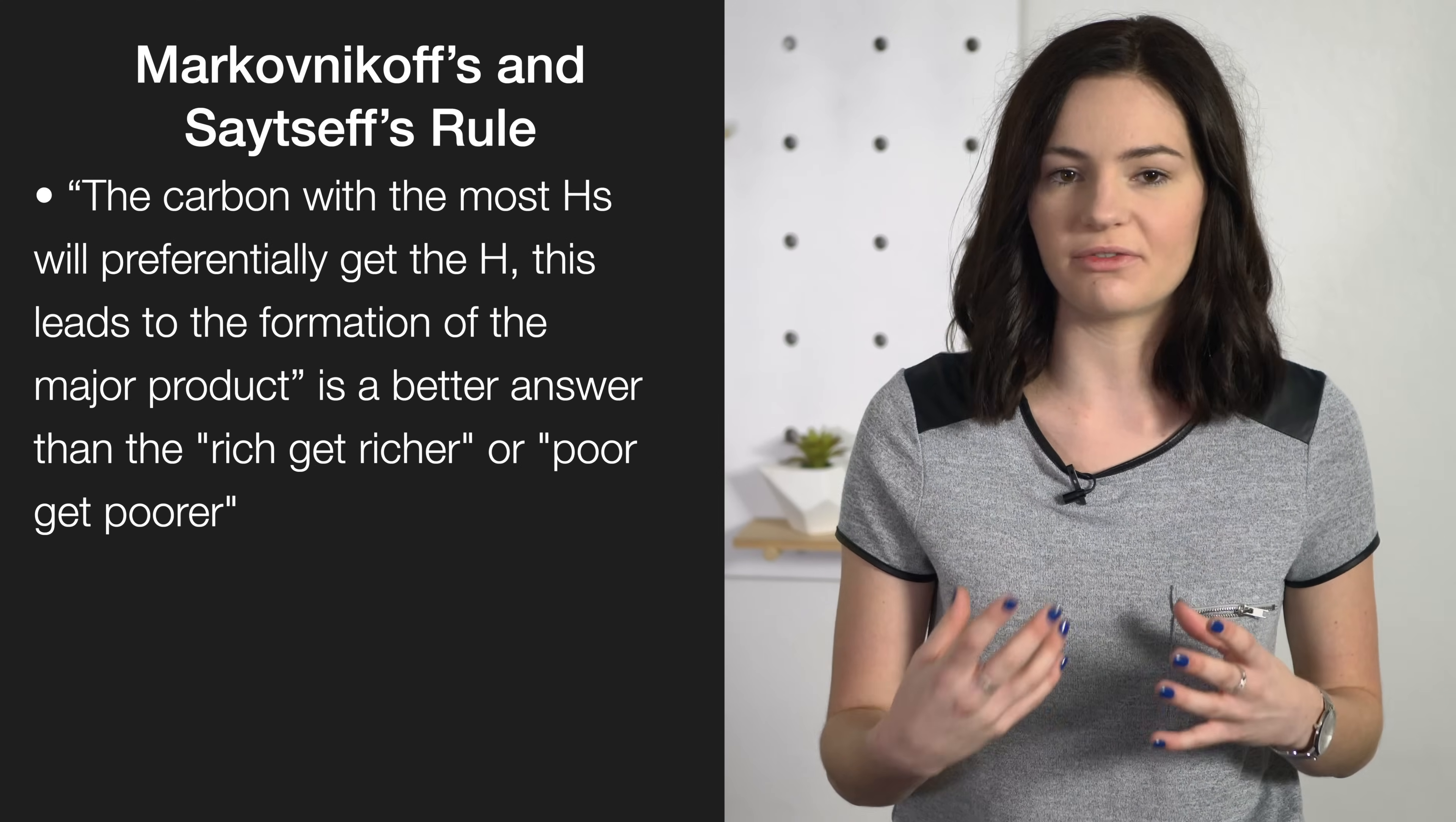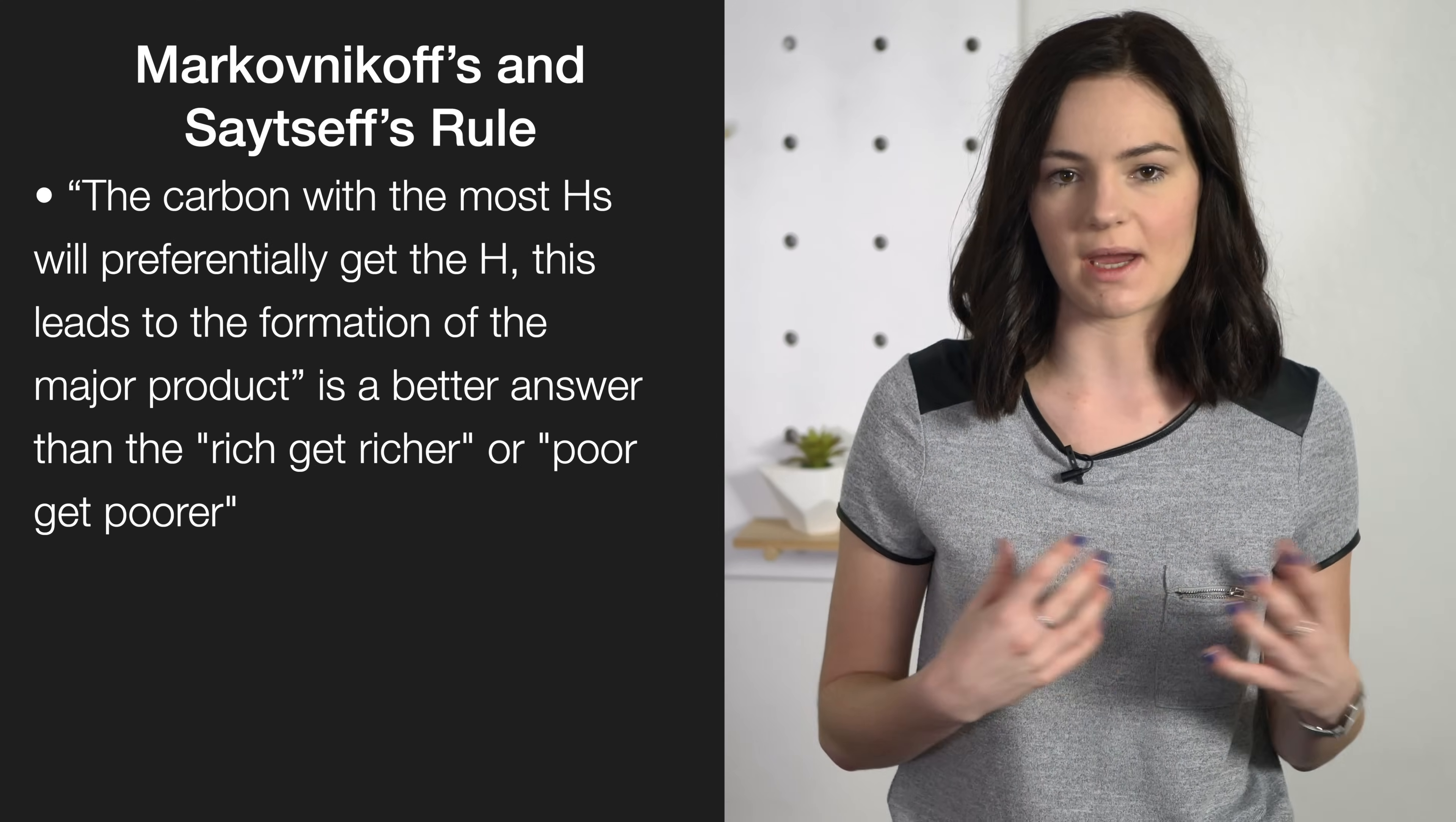So the Markovnikov and the Zaitsev rules come up in every single exam. It's quite useful to know them as the rich get richer and the poor get poorer, but the examiners are most likely looking for a more specific definition. For example, instead of saying the rich get richer, you can say that the carbon with more hydrogens will preferably get more hydrogens forming the major product.